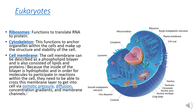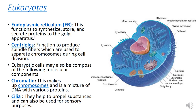The cell membrane can be described as a phospholipid bilayer and also consists of lipid and protein. Because the inside of the bilayer is hydrophobic, in order for molecules to participate in reactions within the cell, they need to be able to cross this membrane layer to get into the cell via osmotic pressure, diffusion, concentration gradient, and membrane channels.